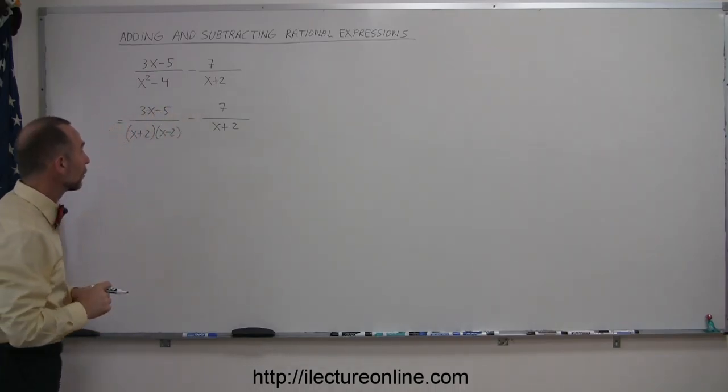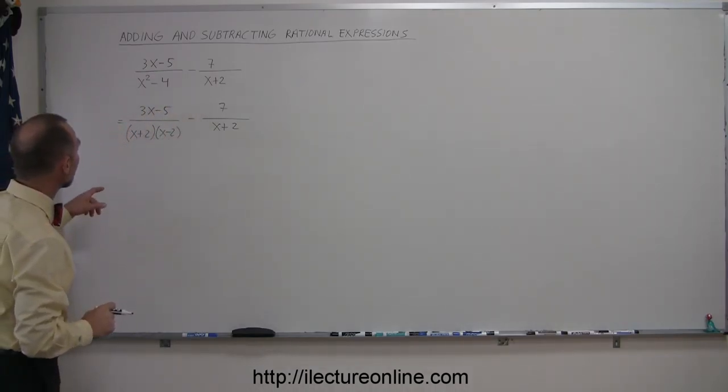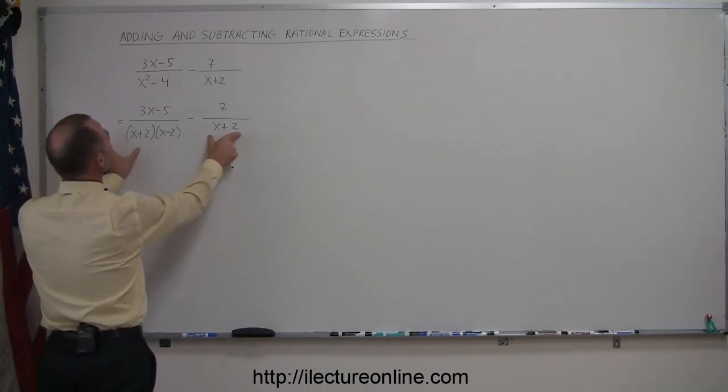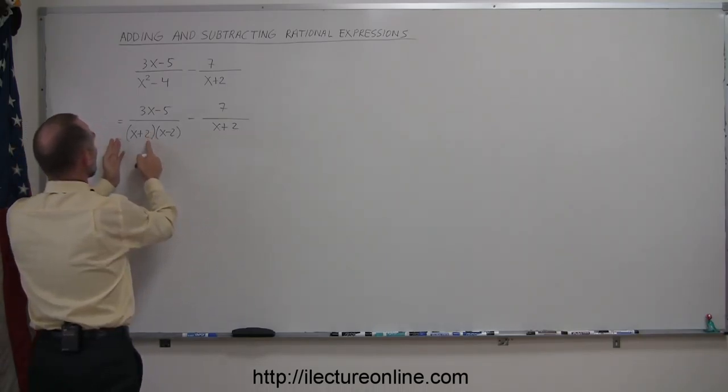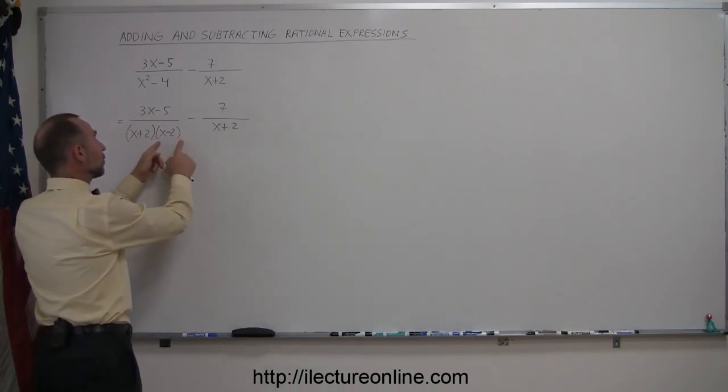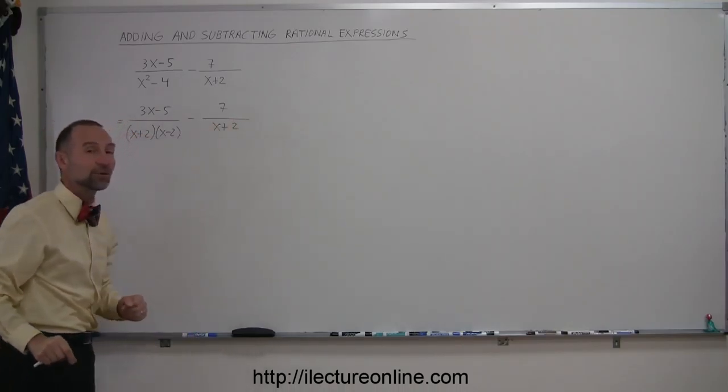So now that you've factored the left denominator, you can then see that there's some commonality between the two denominators. You have an x+2 here, you have an x+2 there, you have an x-2 here, but you don't have an x-2 there.